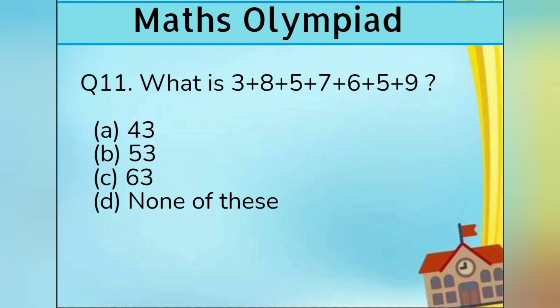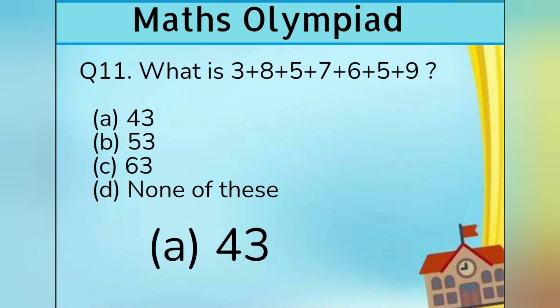Question number 11. What is 3 plus 8 plus 5 plus 7 plus 6 plus 5 plus 9? Option A 43, Option B 53, Option C 63, and Option D none of these. Answer is Option A 43.